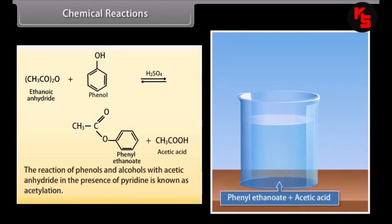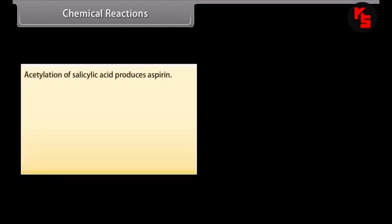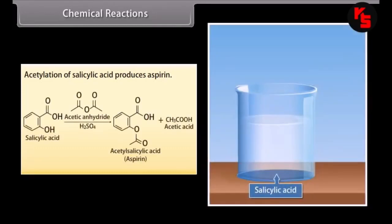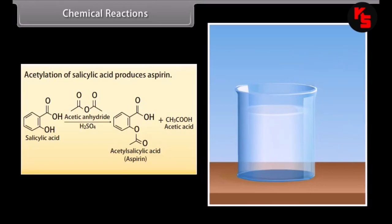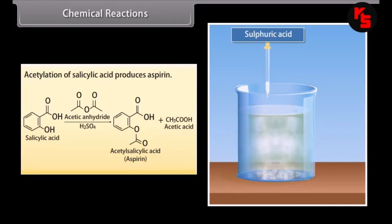Phenol reacts with acid chlorides and acid anhydrides to form esters, but phenols do not easily undergo esterification with carboxylic acids because the reaction is endothermic. Phenol reacts with acetyl chloride in the presence of pyridine to form phenyl acetate and hydrochloric acid. Ethanoic anhydride reacts with phenol in the presence of sulfuric acid to form phenyl ethanoate and acetic acid. The reaction of phenols and alcohols with acetic anhydride in the presence of pyridine is known as acetylation. Acetylation of salicylic acid produces aspirin.